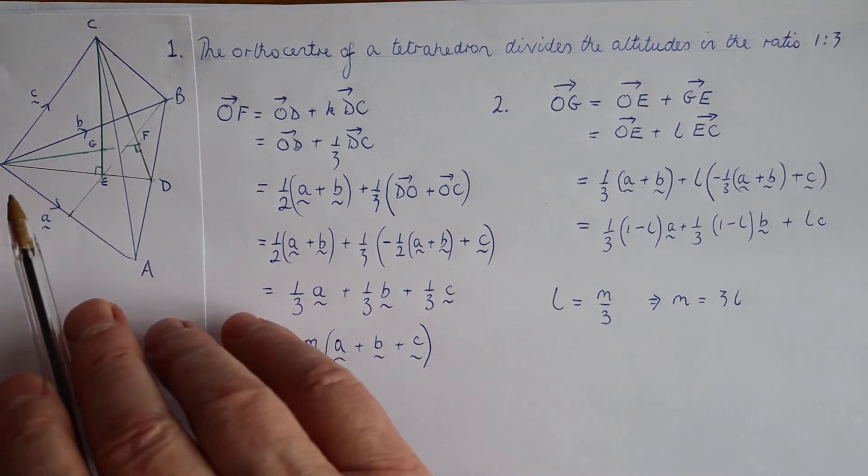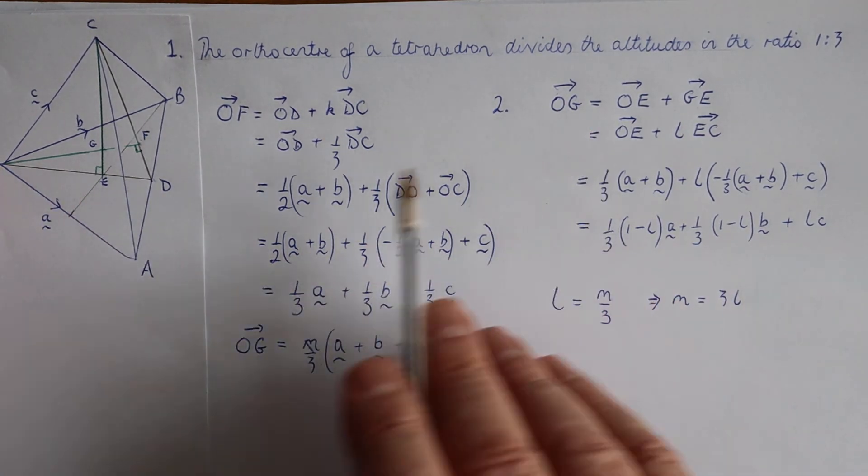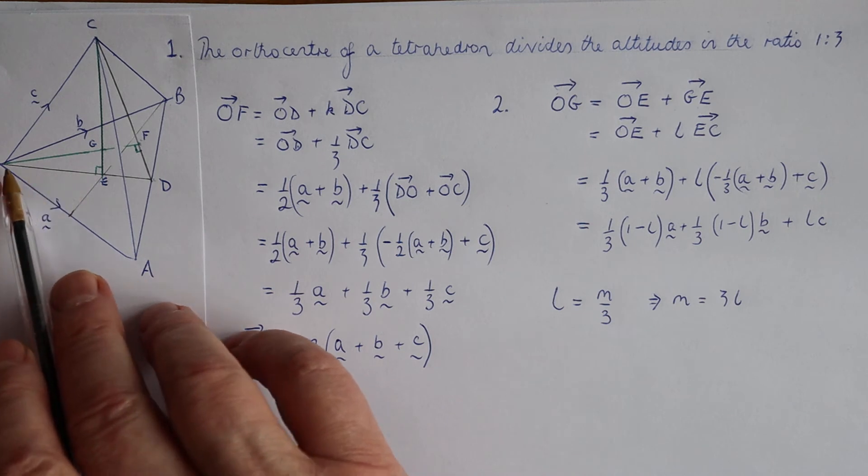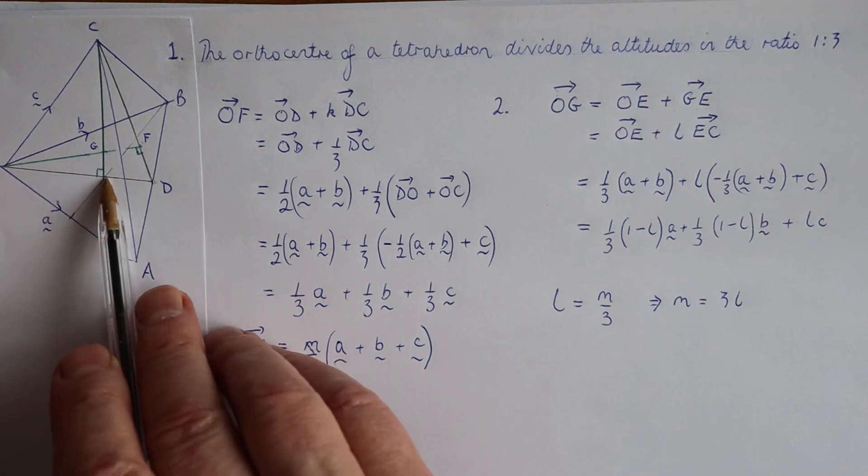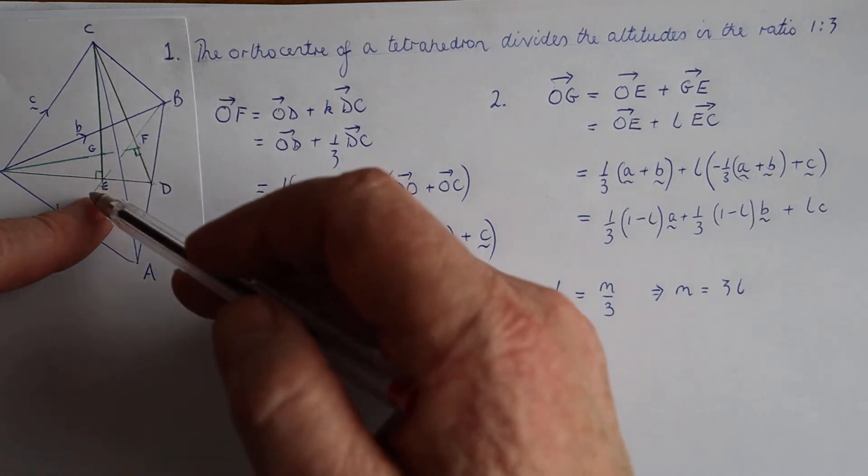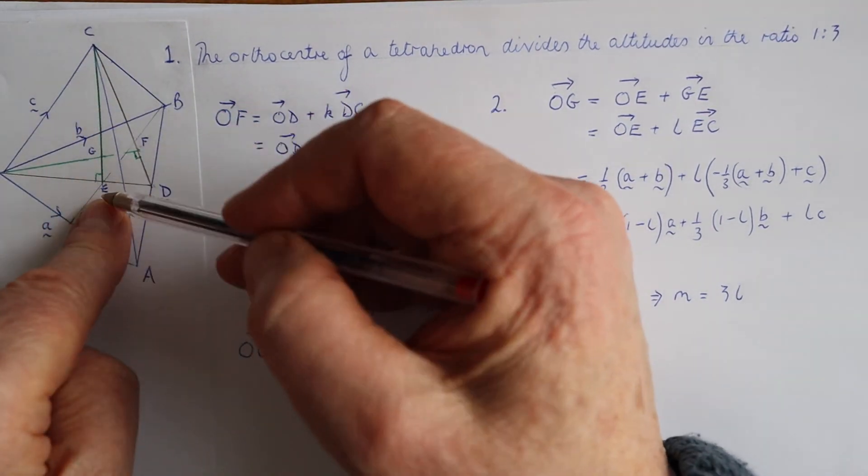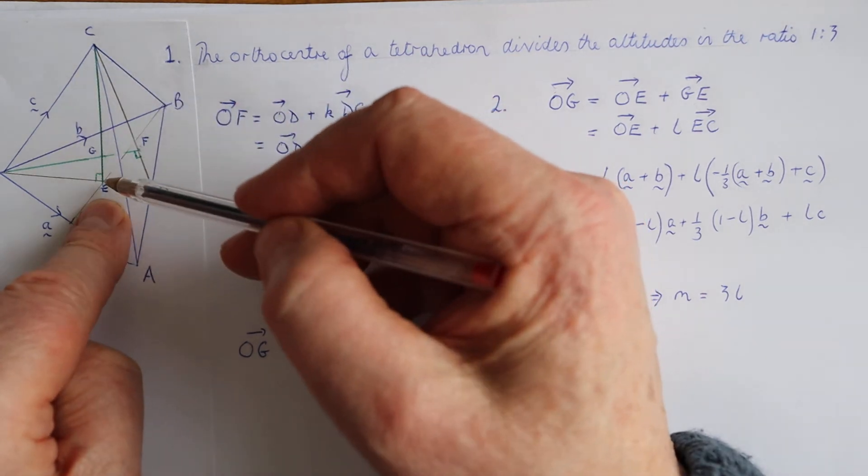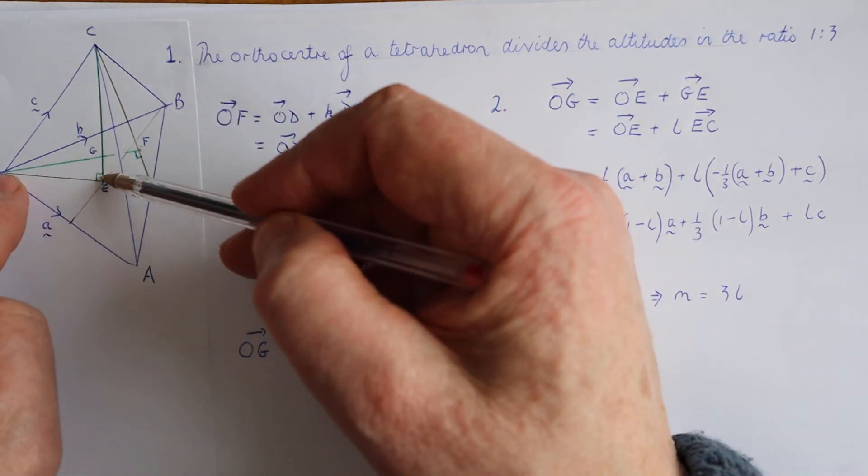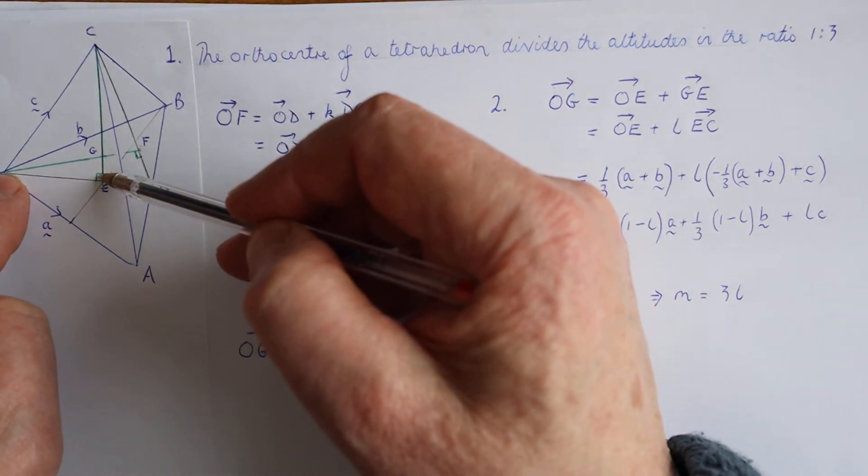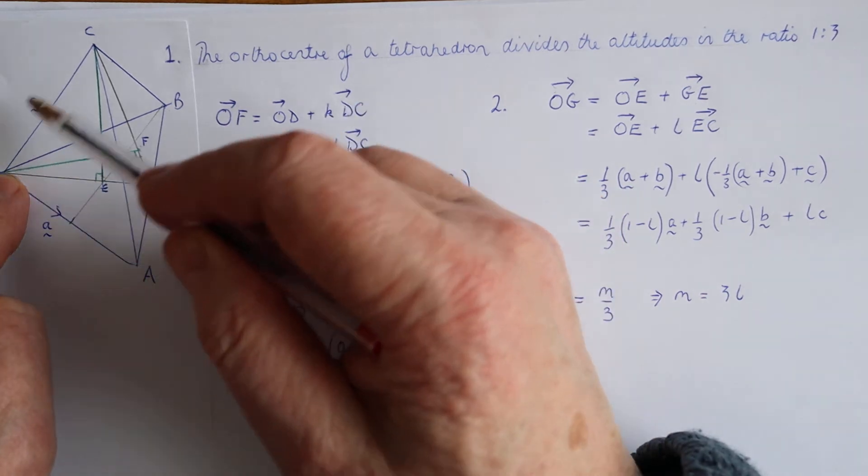So now we can say that OG is one third of A plus B, which is OE, plus L times EC. Now how do we get EC vector-wise? Well, we'd need to go back from E to O, so negative one third A plus B plus C.